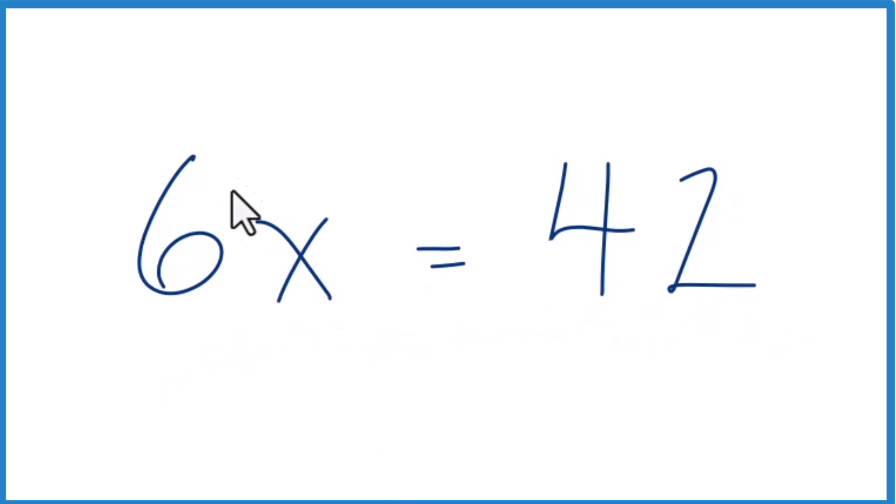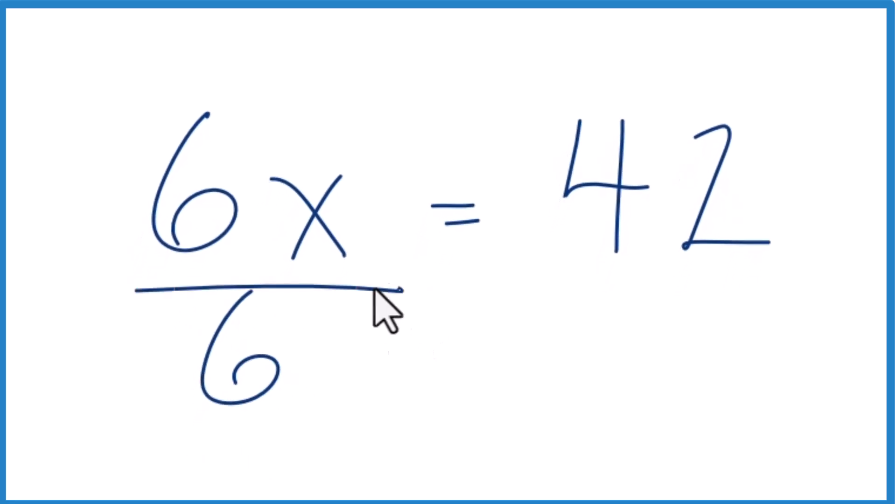To do that, we want to get rid of the 6. So let's divide by 6. 6x divided by 6 - 6 divided by 6 is 1, so we can just get rid of this and have 1x. We just write x.